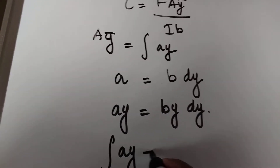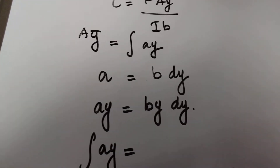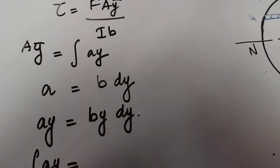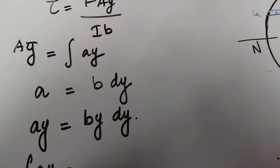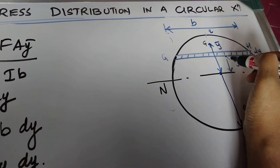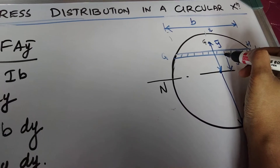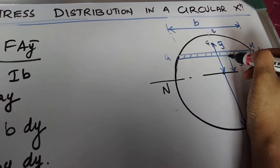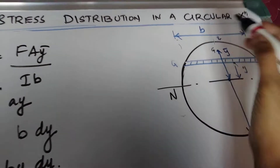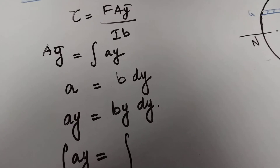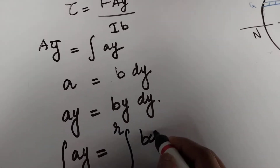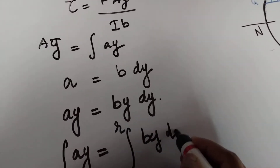the integral of A·y, where the limits will be above the layer GH — starting from y and reaching to r. So the limit will be integral from y to r of b·y·dy.